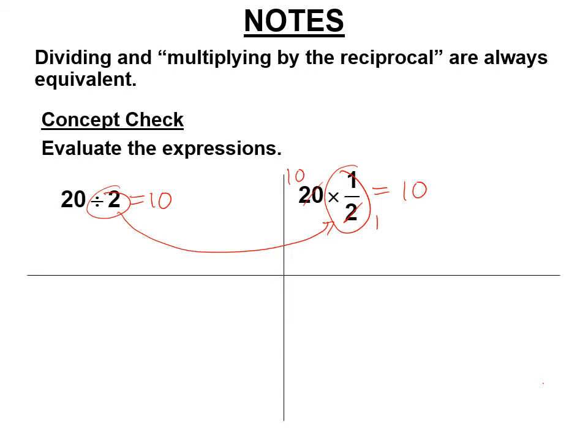Now, is multiplying by 1 half easier than dividing by 2? No, it's not. But we will need it for fractions. So 24 divided by 4 is 6. Dividing by 4 is the same as multiplying by the 4 flipped over, 1 fourth. Right? 4 divided by 4 is 1. 24 divided by 4 is 6.